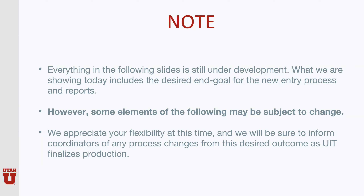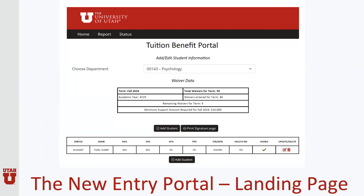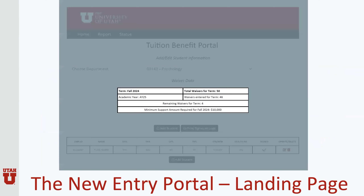We are updating the new entry portal landing page. Some of those updates include updating the allocation information to instead show the waiver information that reflects our new changes in the guidelines. You'll get information such as your total waivers for the term, your entered waivers for the term, and how many you have remaining. We also will have some minimum support requirements there for your review.